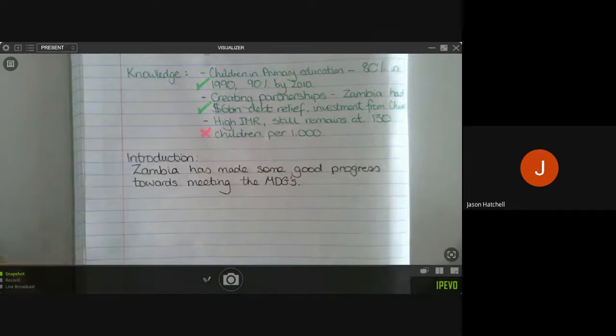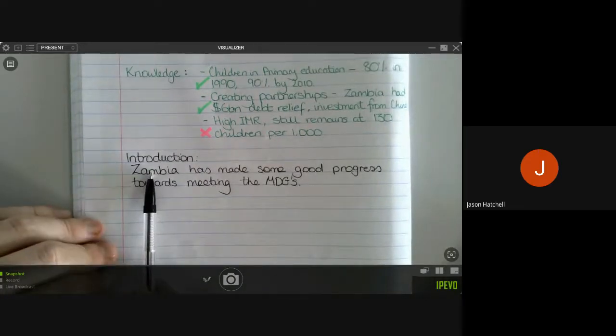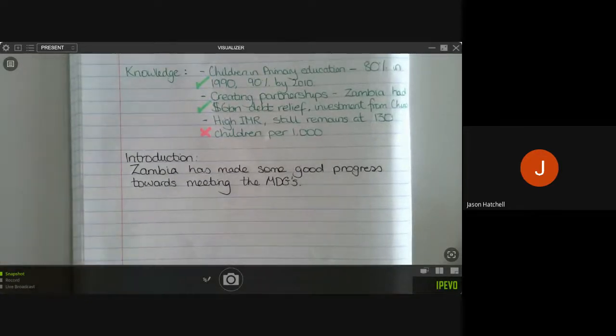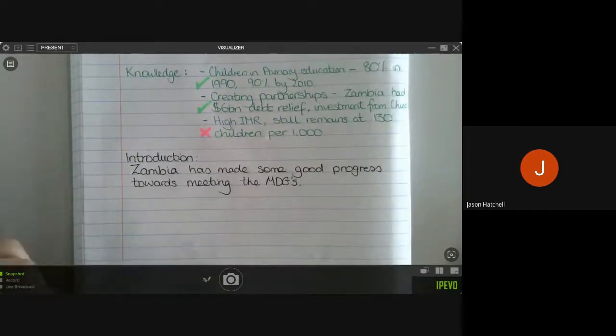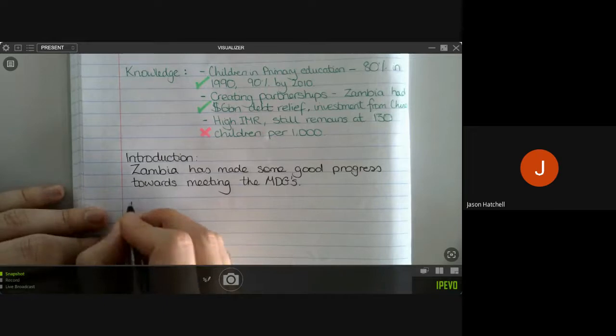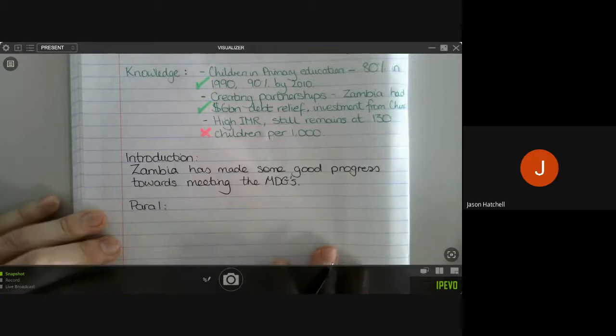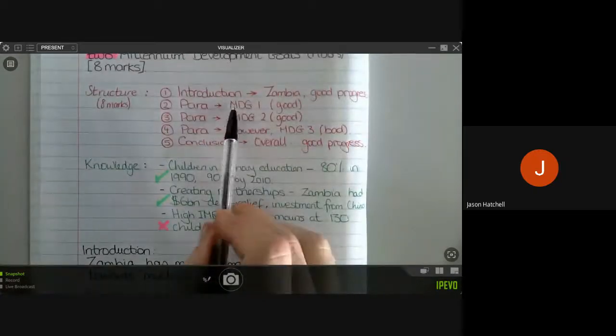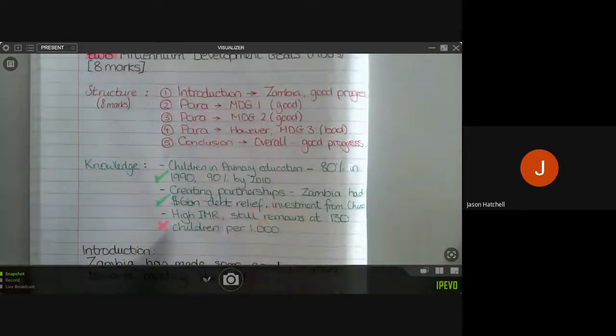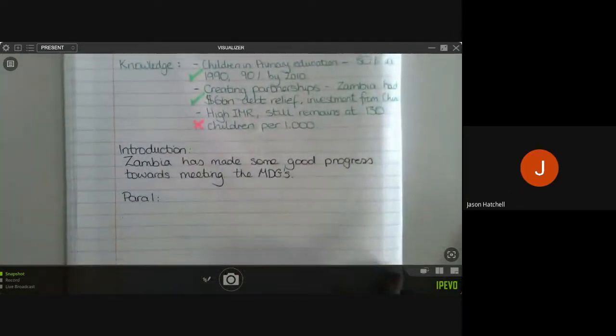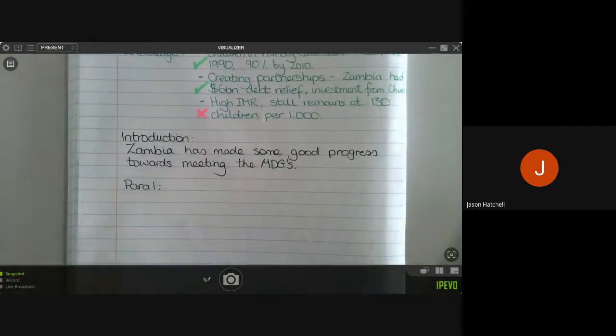That is our introduction done. It's done exactly what we want it to do. It's named the place we're going to talk about, which is an LIDC, and it's set out the argument that Zambia has made some good progress. So we then move straight on to paragraph one, which, as we said earlier, is going to be a paragraph outlining a Millennium Development Goal that Zambia has succeeded in achieving or has made good progress on.